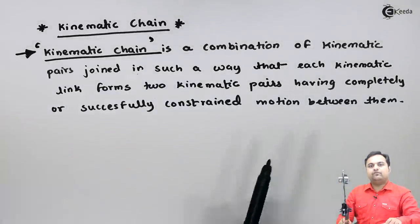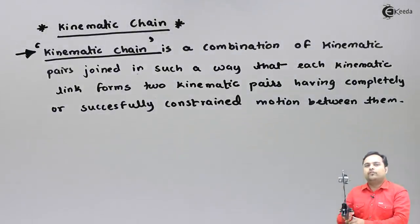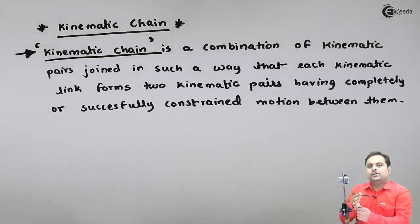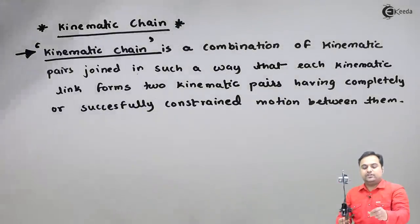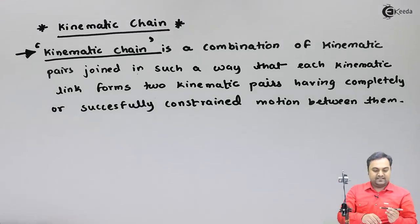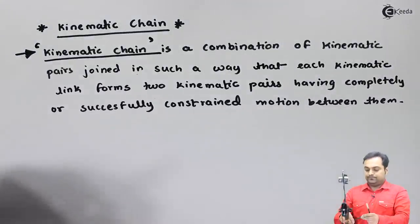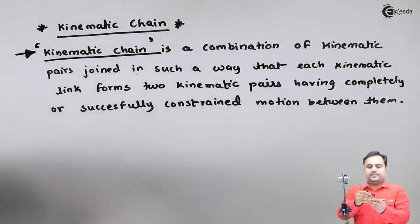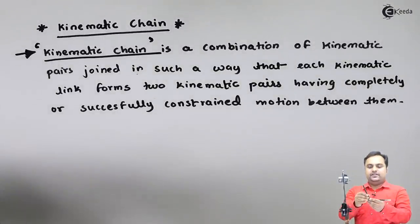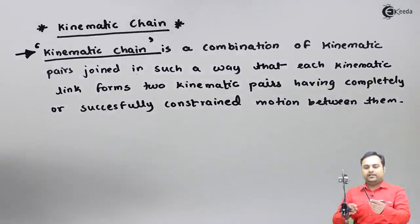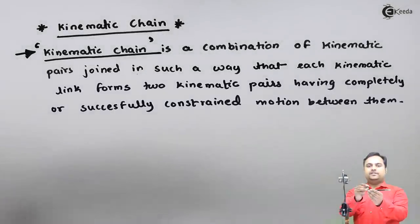A kinematic chain is not a rigid or fixed structure — it will move. Each link is connected to two separate links, forming two kinematic pairs. They are joined in such a way that the motion is completely or successfully constrained. For example, if two pins are connected, this link can rotate about the fixed point.